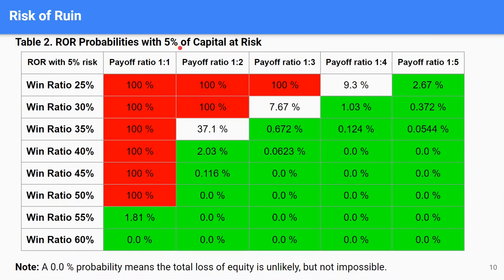In the second case, if you decrease your risk to 5% per trade, you can still see that for a payoff ratio of one to one and a win ratio up to 50%, the risk of ruining your account is still 100%. But if your payoff ratio is one to two and your win ratio is 40%, then the probability of ruining your account is only 2%. Please note that a zero percent probability means total loss of equity is unlikely but not impossible.